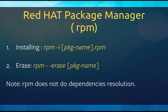The backend manager is the Red Hat Package Manager or RPM. You can install a program using RPM by typing rpm -i and giving a package name with a .rpm file extension. For erasing, you can do rpm --erase and give a package name. One important thing to note is that RPM does not do dependency resolution by itself, so you do have to take care of that as well. That was all about the package managers in theory.